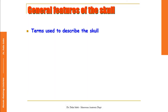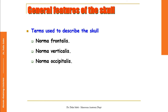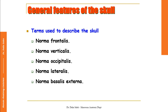We describe the skull using certain terminology. The view through which we look at and describe the skull is called the norma. So we have norma frontalis when describing the skull from the front, norma verticalis when describing it from above, norma occipitalis for the rear view, norma lateralis for the lateral view, norma basalis externa when describing the base of the skull from outside, and norma basalis interna when describing the skull base from inside or from the cranial cavity view.